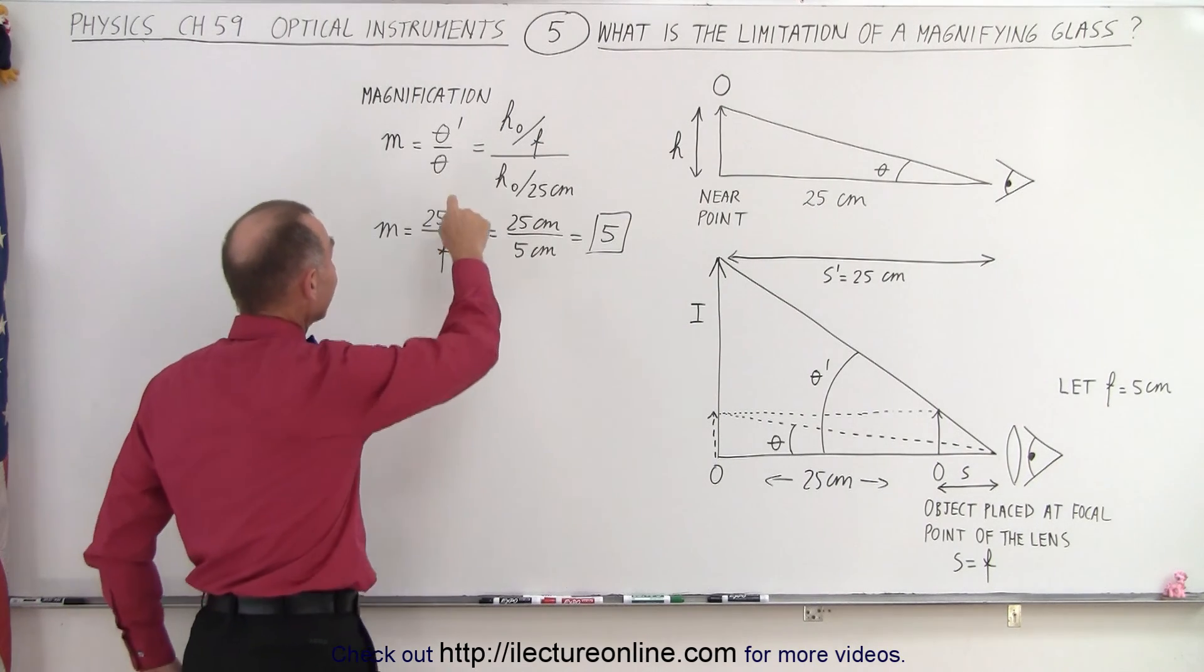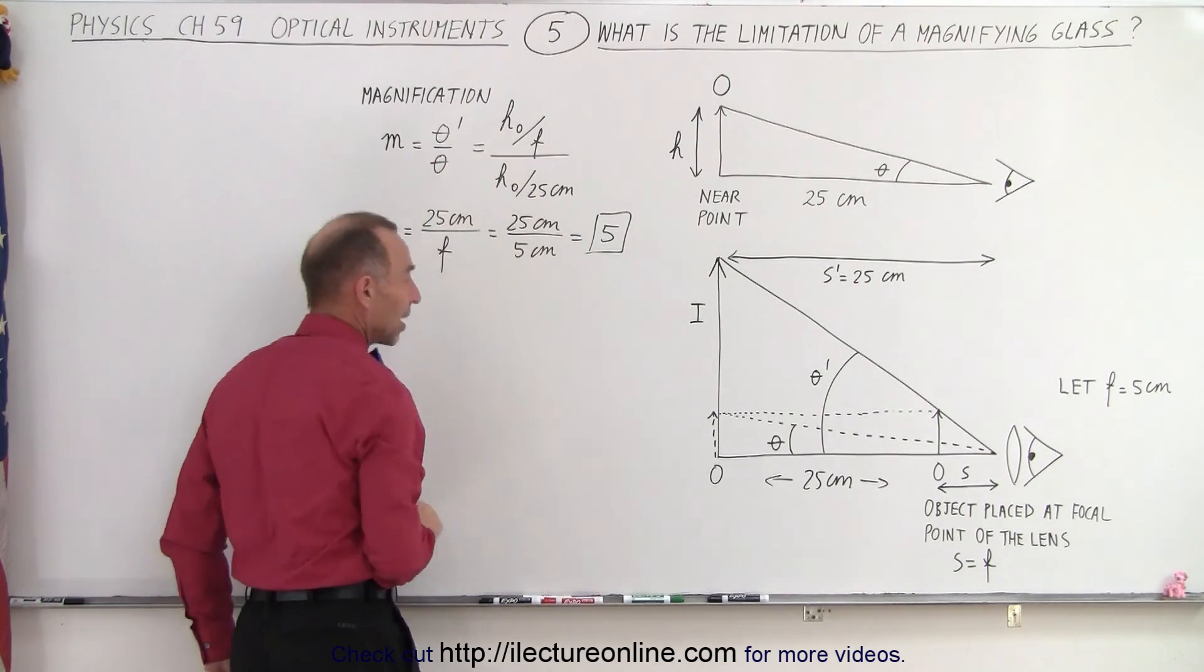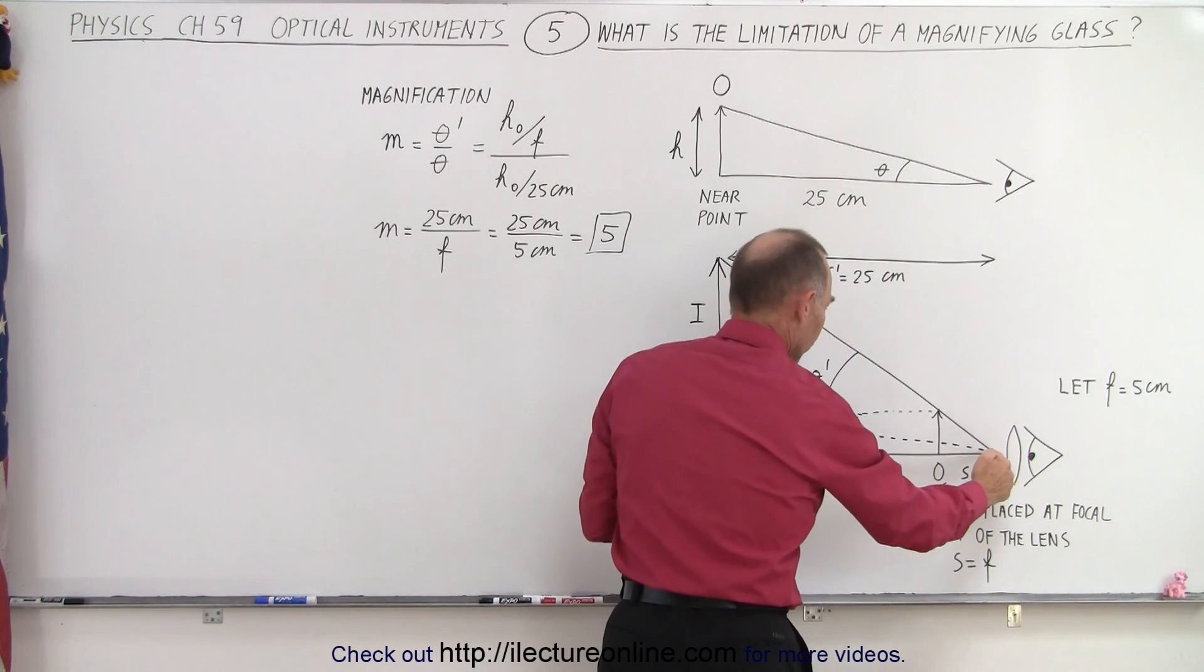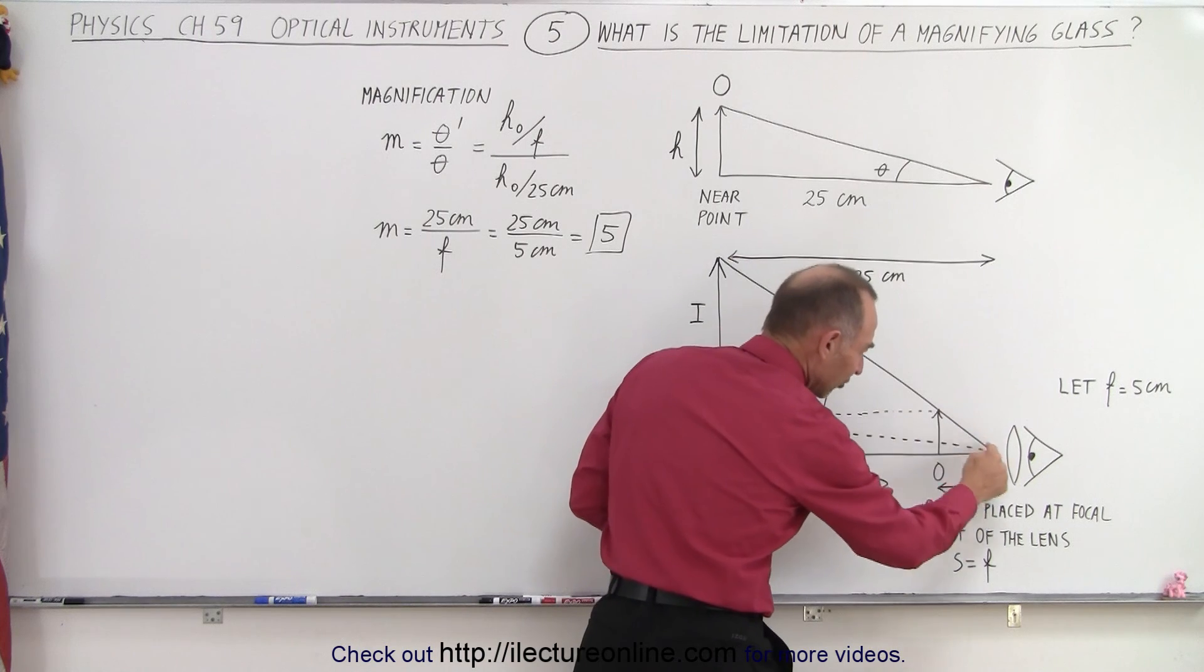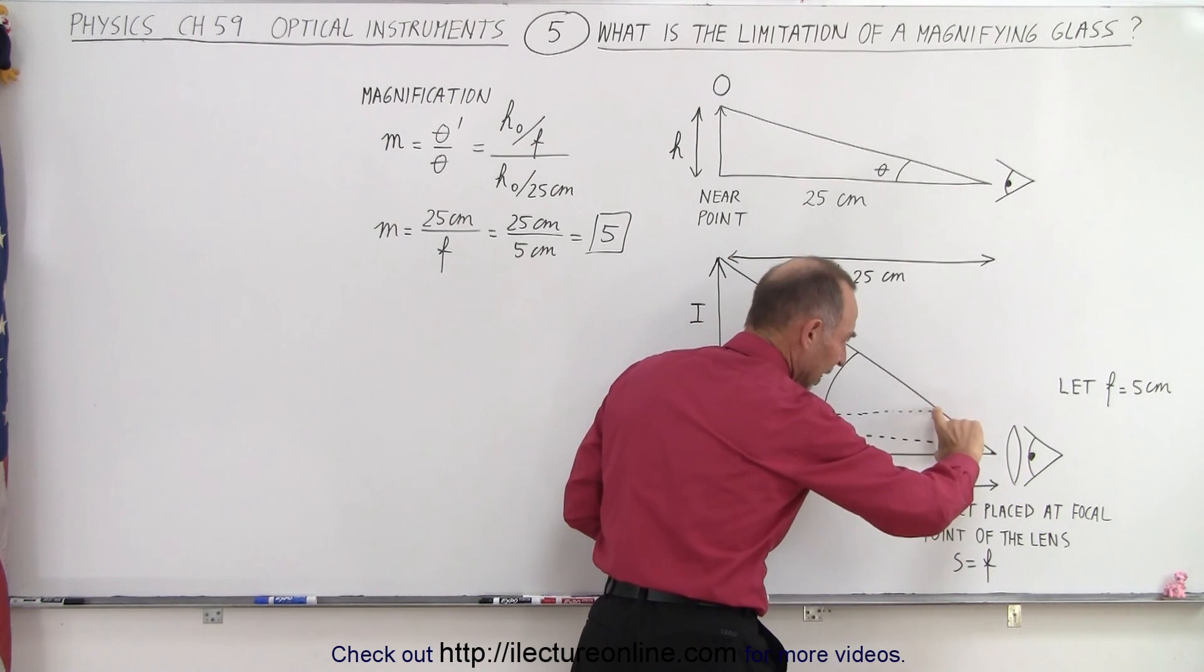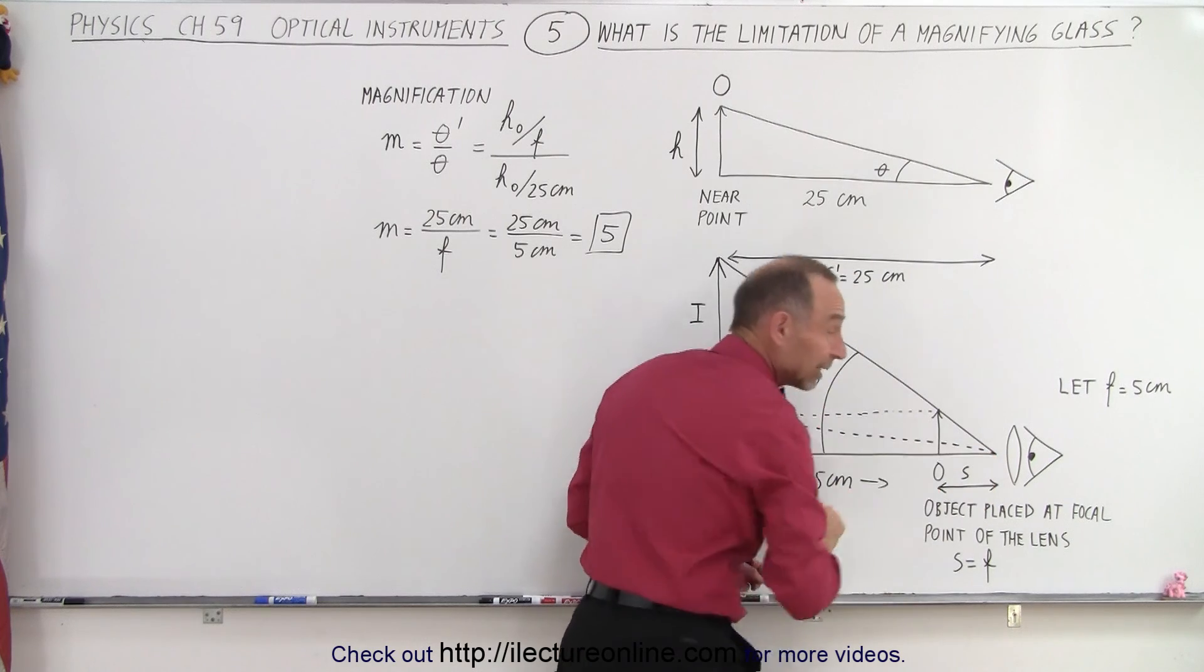Now, the angle theta prime is essentially this height to this distance. Since we don't know that, we can take this triangle right here, because these are similar triangles, and we can simply take the height of the object divided by the focal length of the lens.